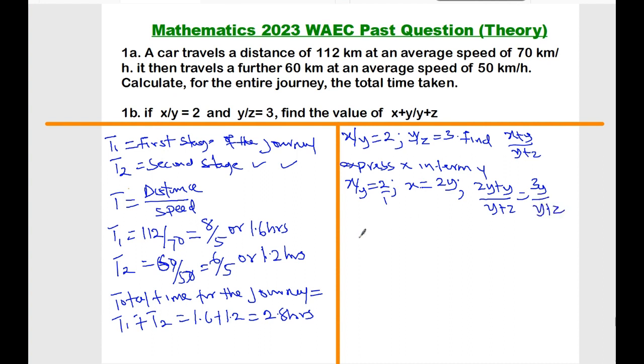Then from the second equation, which is y over z equals 3, y equals 3z. So let's substitute y from this second expression in this equation, which is 3y all over y plus z.